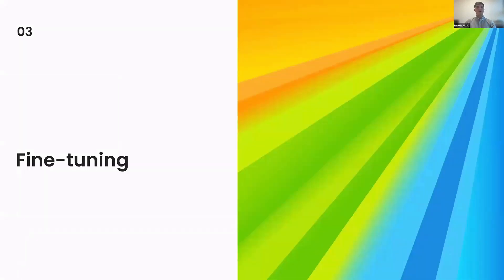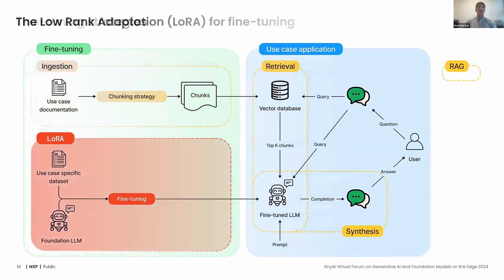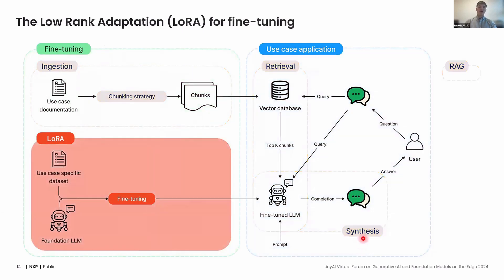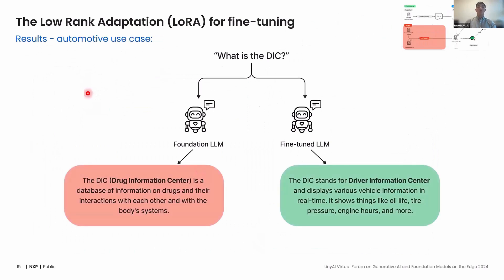Let's start with fine-tuning. We have two fine-tuning strategies. The first is low-rank adaptation, LoRA or QLoRA. The idea is to add a few trainable parameters to the model and retrain them on our specific use case, refocusing the model's vocabulary. For instance, on an automotive use case, if we ask 'what is the DIC,' the foundation model gives the most likely answer — the drug information center — while we want our fine-tuned model to talk about the driver information center. That's mostly what LoRA is for.